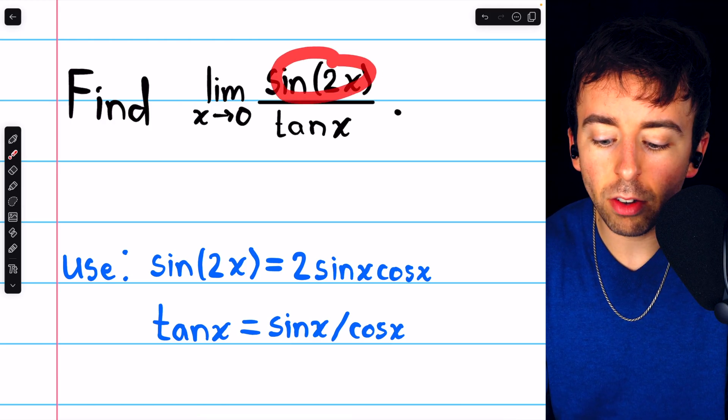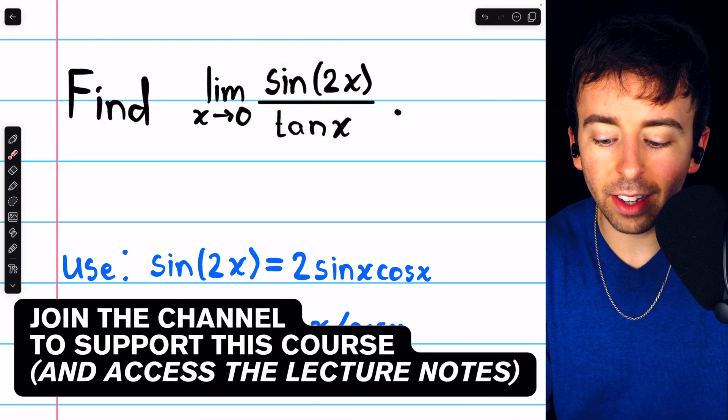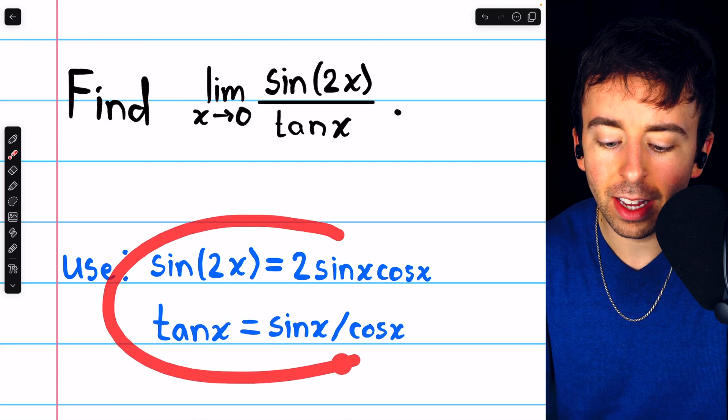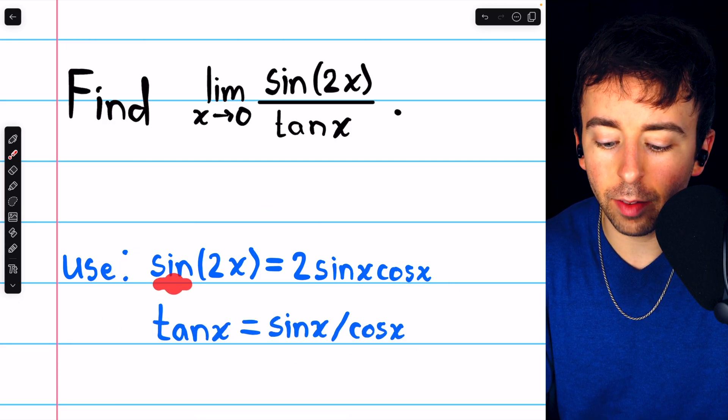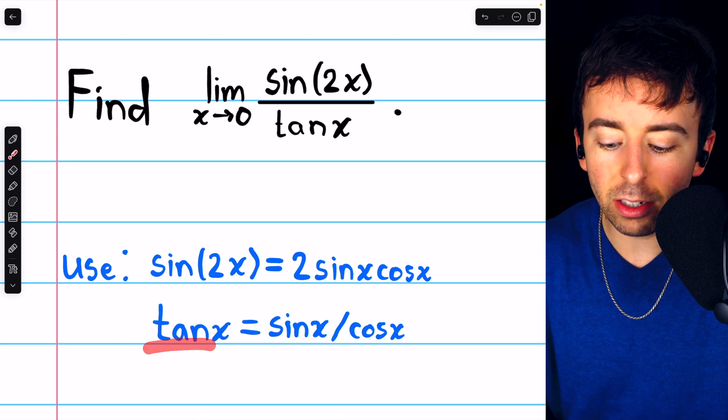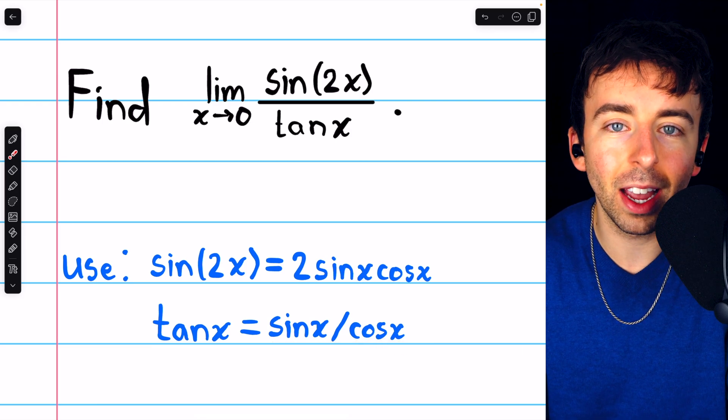Finding the limit of sine of 2x over tangent x as x approaches zero is easy. We just need to use these two facts. The double angle identity, sine of 2x equals 2 sine x cosine x, and the fact that tangent x equals sine x divided by cosine x.